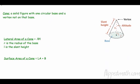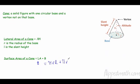Next: a cone is a solid figure with one circular base and a vertex not on that base. It's similar to a pyramid, but now the base is a circle. We still have a slant height and a height from the vertex, plus a radius. The lateral area formula is π times radius times slant height, and the surface area is πrl plus πr².